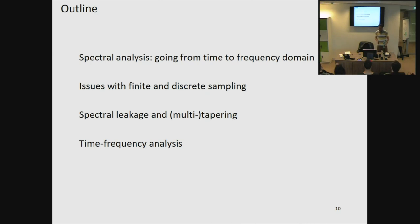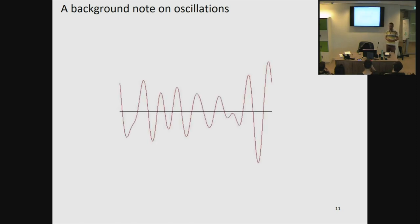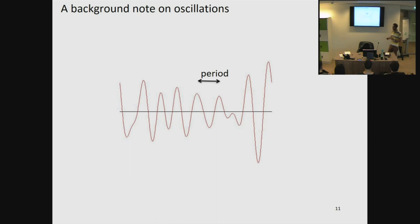Before we really start, let's define what an oscillation really is. An oscillation is nothing more than a line that wiggles back and forth relative to a fixed point. There are three features to keep in mind. The first one is the period — the distance between one peak and the next. If we divide one by the period, we get the frequency, so the amount of cycles that fit into one second, which is expressed in hertz.